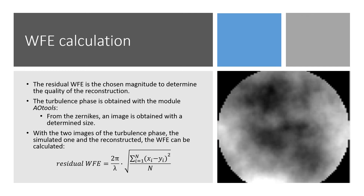To determine the residual wavefront error, the images of the turbulence phase are needed. The outputs of the neural network are the Zernike coefficients, so it is necessary to reconstruct the phase profile before the error is calculated. To reconstruct the profile, a function of the AOTools module is used, called phase_from_zernikes. The function allows reconstructing the image of the phase profile from a list of Zernike coefficients. The greater the number of coefficients, the more accurate the reconstruction will be.